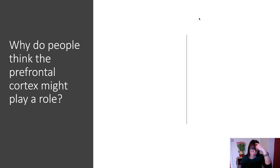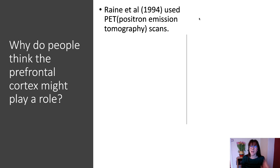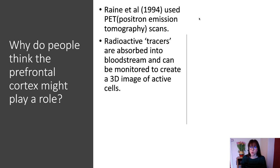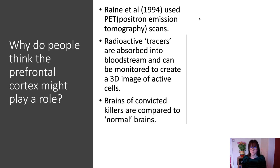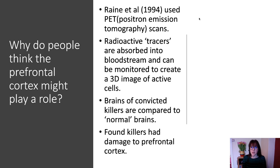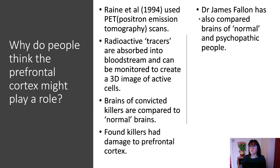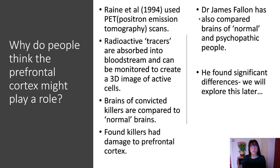Raine et al. (1994) used PET — positron emission tomography — scans, where radioactive traces absorbed into the bloodstream create a 3D image of active brain cells. Comparing brains of convicted killers to normal brains, they found killers had damage to the prefrontal cortex. Dr James Fallon also compared brains of normal and psychopathic people and found significant differences.